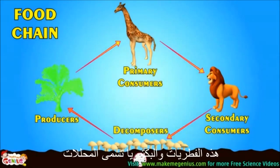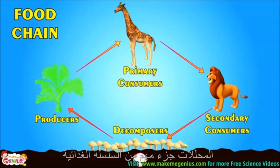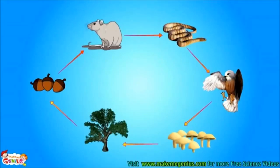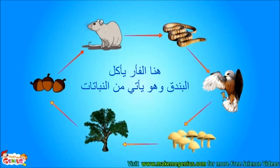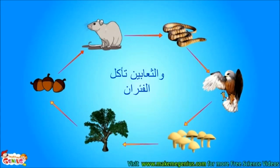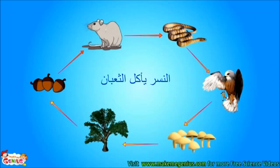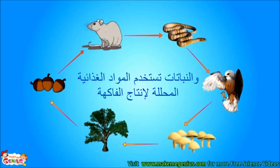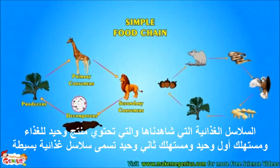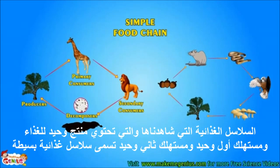These nutrients are again used by plants. These fungi and bacteria are called decomposers — they are an important part of the food chain. Here is another food chain: a rat eats acorns from a plant, a snake eats the rat, an eagle eats the snake, the eagle dies, gets decomposed, and plants use those decomposed nutrients to produce fruit.